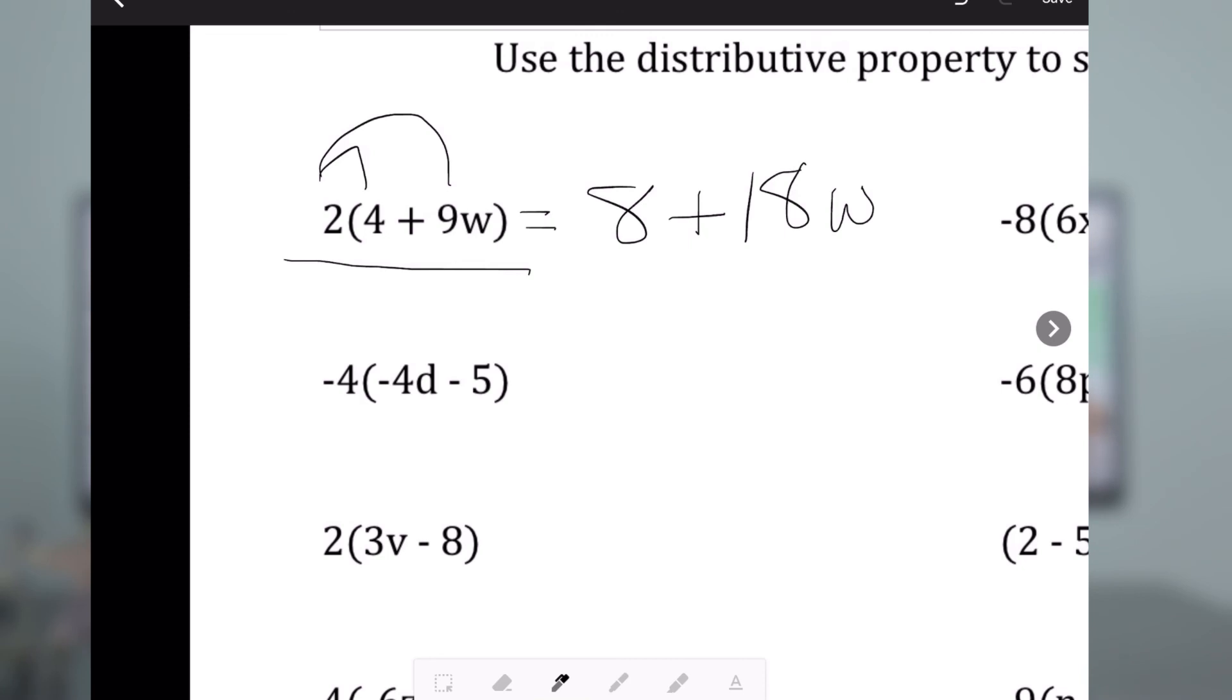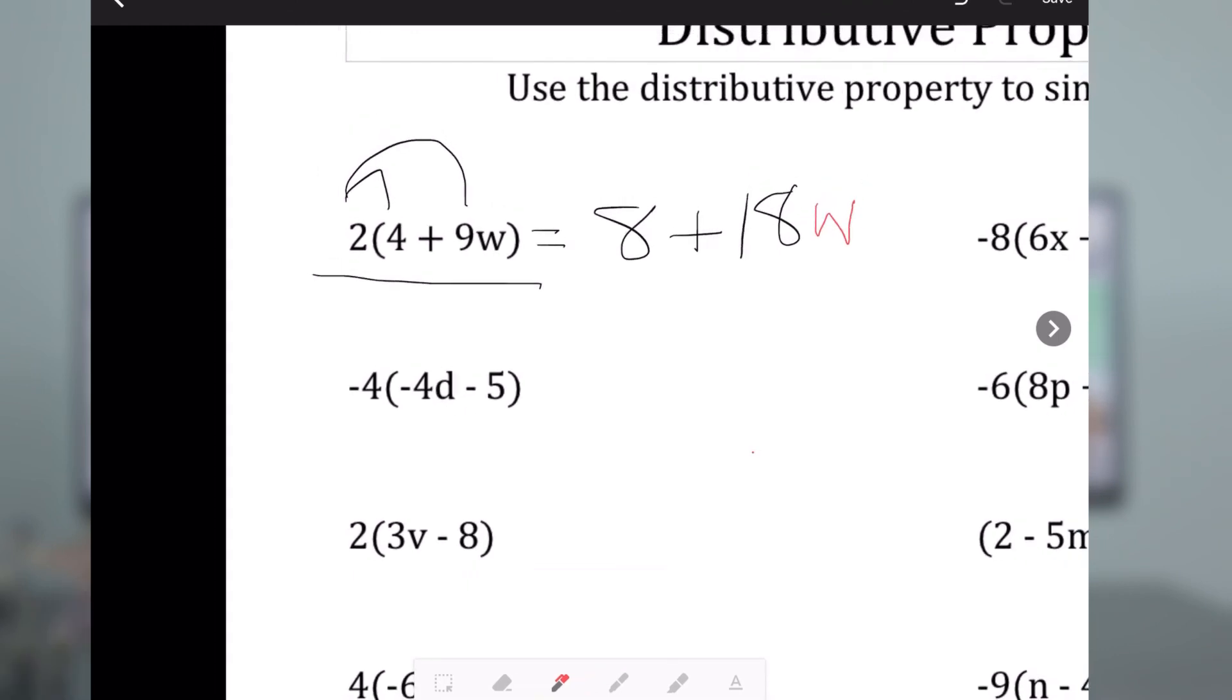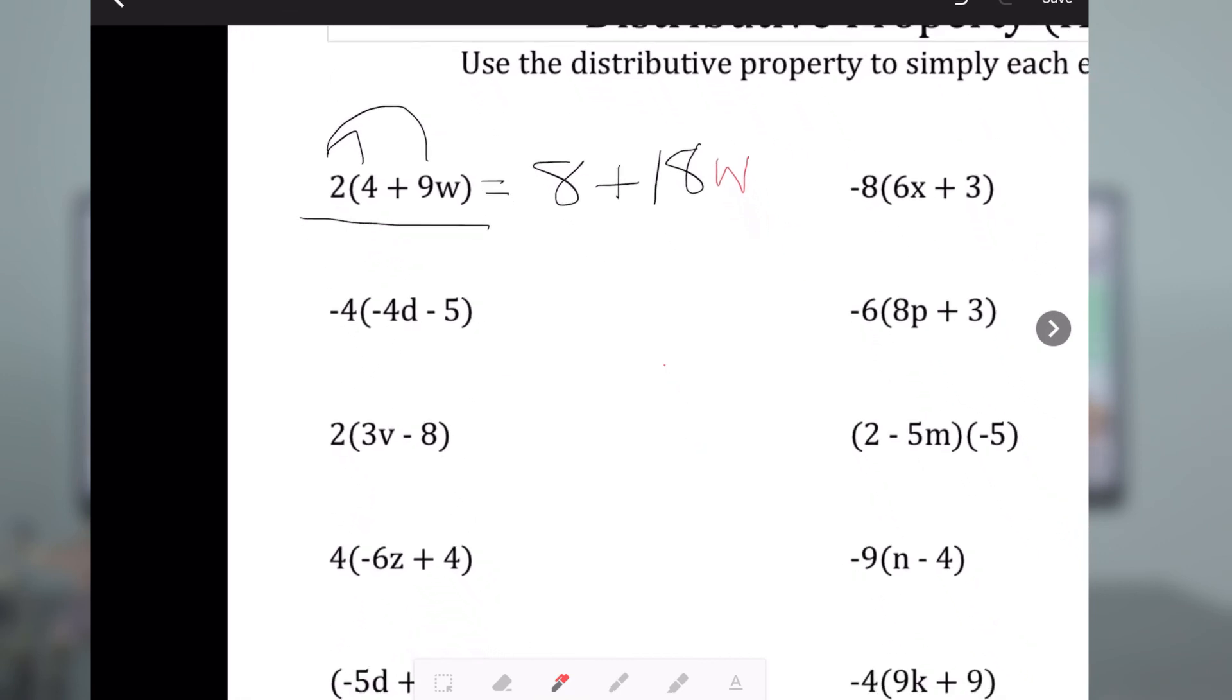If I made a mistake, I can hit this eraser tool that's right next to the pen tool, and I can erase that W. Hit the pen tool again, and maybe I want to change color this time, and I'll write W. If I finished that part, I can once again hit two fingers to zoom out and move somewhere else.